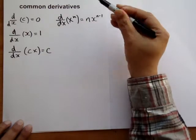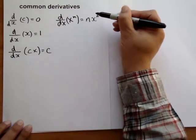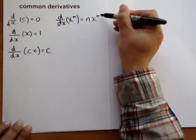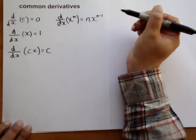The n stands for the original power which is brought down and then we minus 1 from the original power.